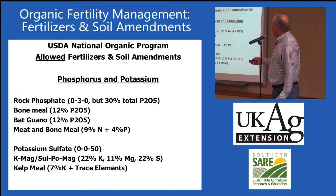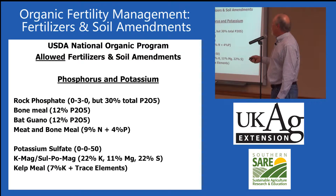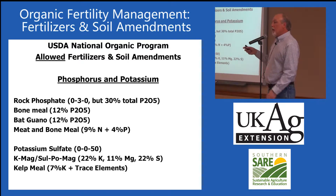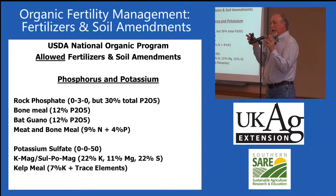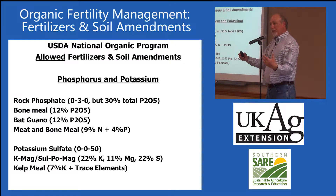On phosphorus, you can use rock phosphate — hard rock phosphate or soft rock phosphate. Bone meal, bat guano, and meat and bone meal are also allowed. For potassium, you can use potassium sulfate from a mined source, and you can actually get it in a very ultra-fine ground material that you can solubilize and inject into fertigation.